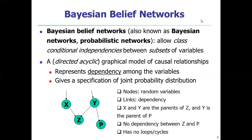The variables may be discrete or continuous values. They may correspond to actual attributes given in the data or to hidden variables, and it captures a form of relationship. Each arc represents a probabilistic dependency. If an arc is drawn from node y to node z, then y is the parent or immediate predecessor of z, and z is a descendant of y. Each variable is conditionally independent of its non-descendants in the graph, given its parents. This figure shows a simple belief network with six Boolean variables, which can be represented very clearly.